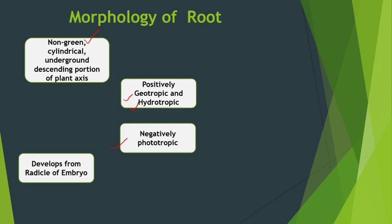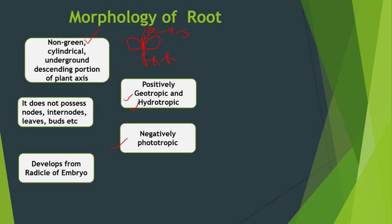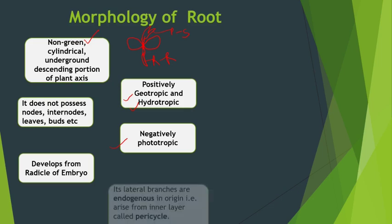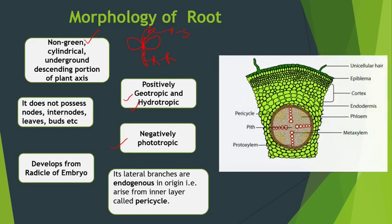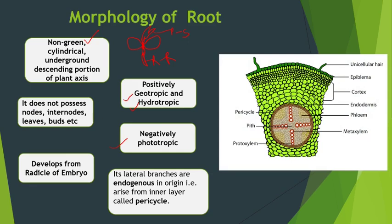True roots usually develop from the radicle of the embryo. In a dicot seed, above the embryonic axis the epicotyl develops, below the embryonic axis the hypocotyl develops. The epicotyl gives rise to the plumule, which gives rise to the shoot system, whereas the hypocotyl gives rise to the radicle, and the radicle gives rise to the root system. Roots do not have nodes, internodes, leaves, or buds. The lateral branches in roots are endogenous in origin — they originate from the inner layer of cells called the pericycle.